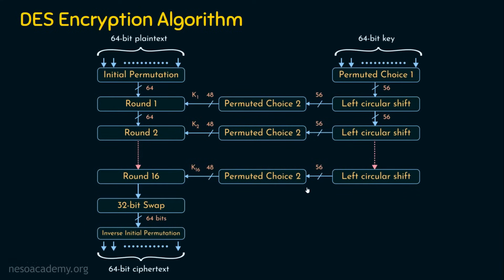What we are going to learn in today's presentation: we are going to learn about the initial permutation, the round function, and the inverse initial permutation function. Let's start with the first one — the initial permutation.